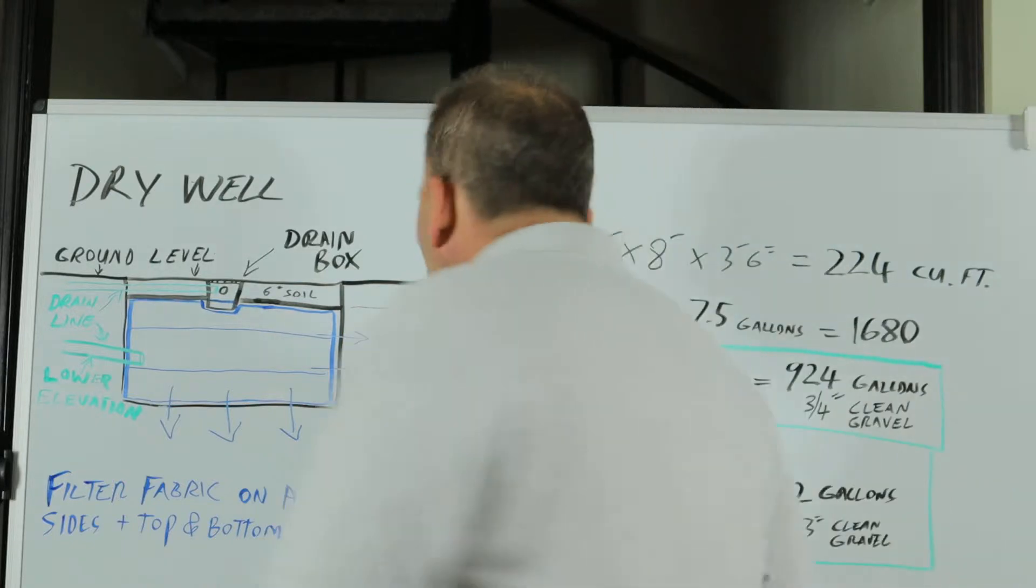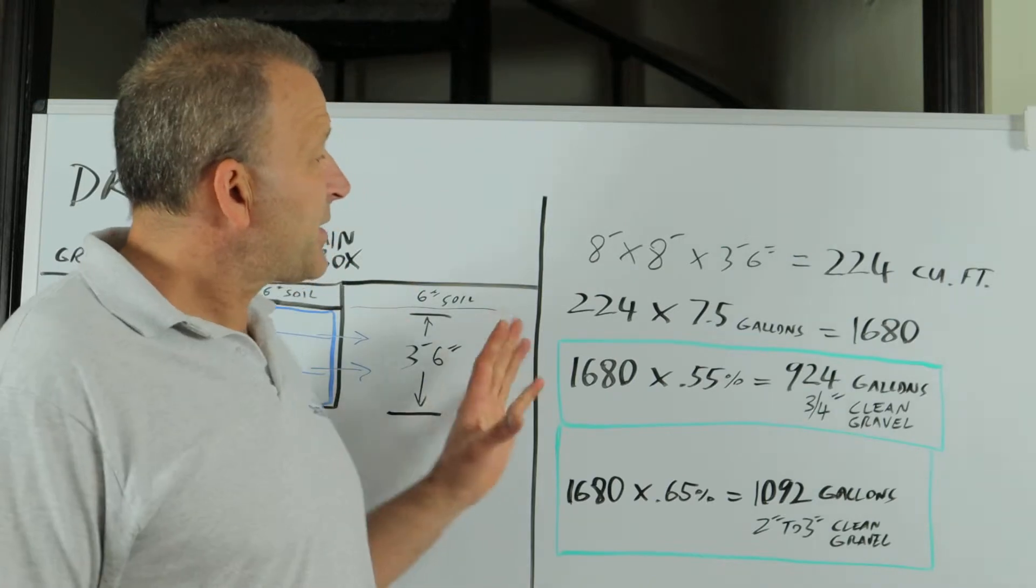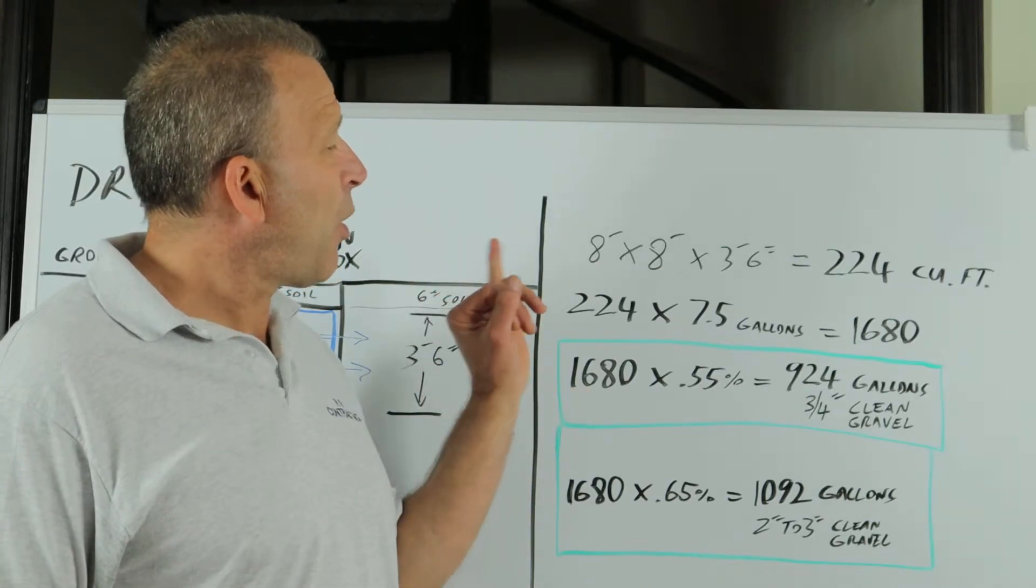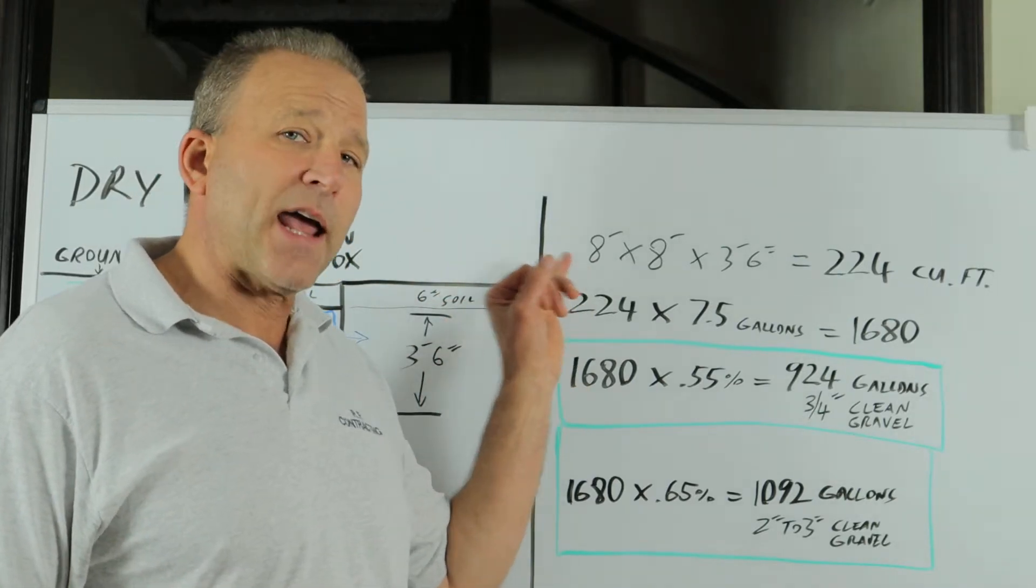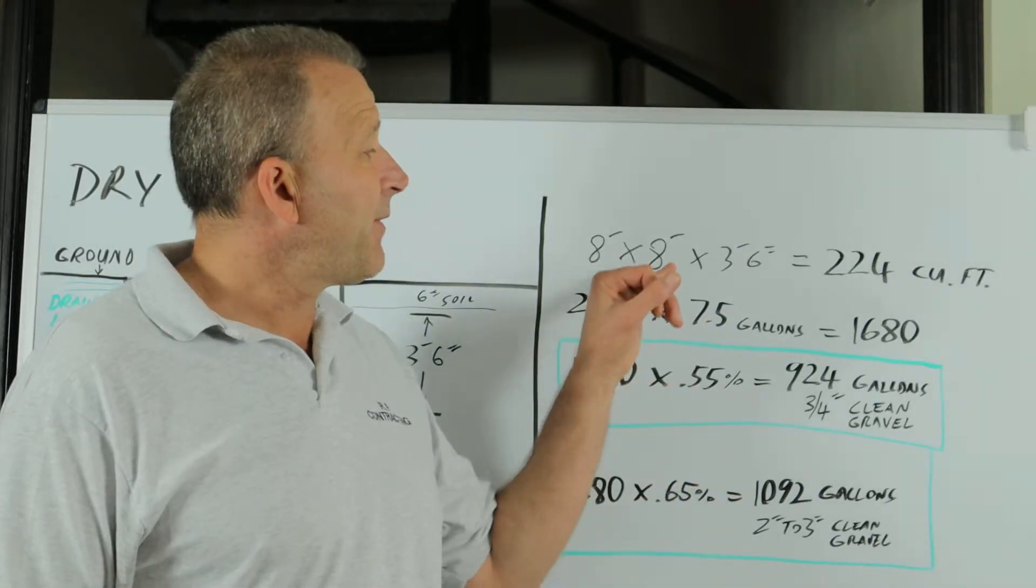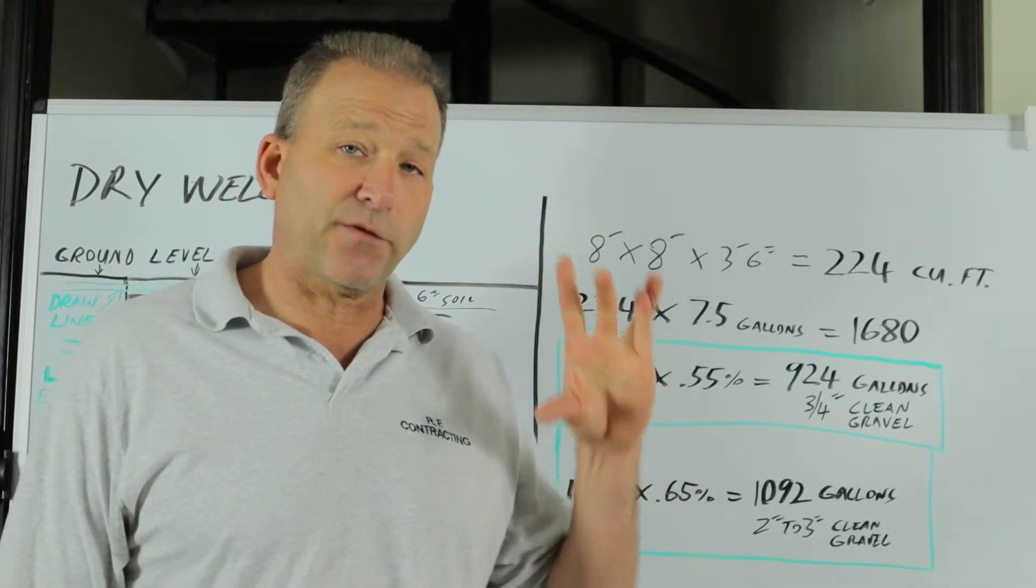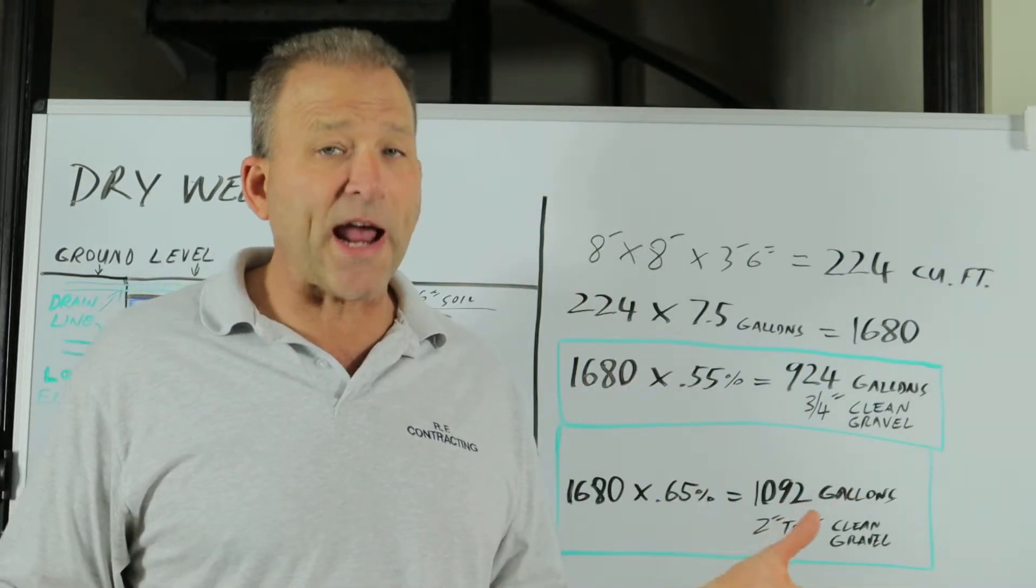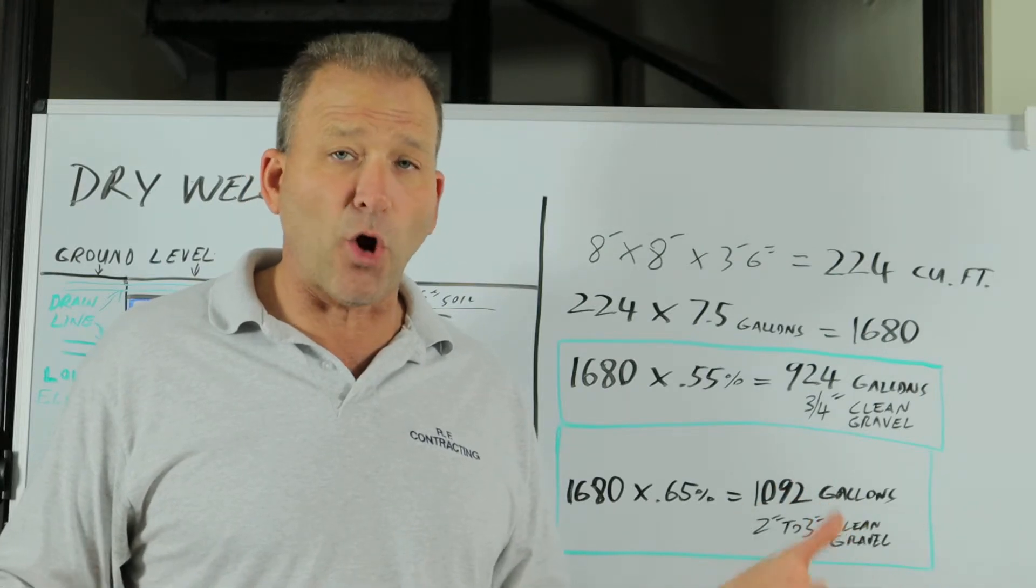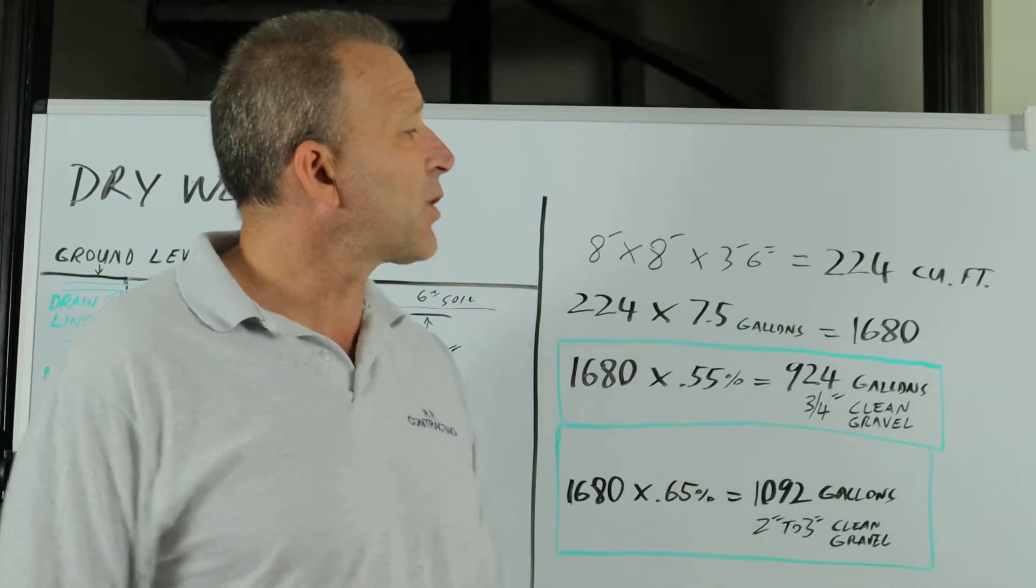Now let's talk about gallon capacity. For this illustration we're talking about a hole that's eight foot wide by eight foot wide by four feet deep. I have here three foot six inches because you're going to use the top six inches for soil to grow grass on top of your dry well and not just have an open gravel pit. That equates to 224 cubic feet.